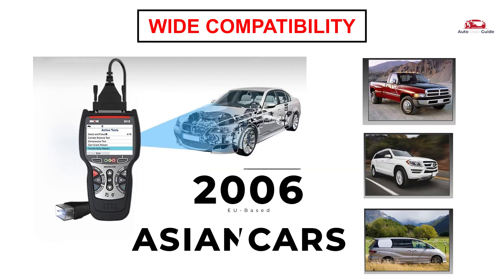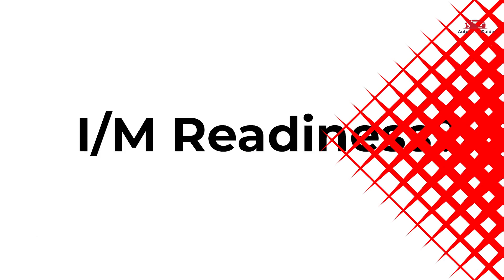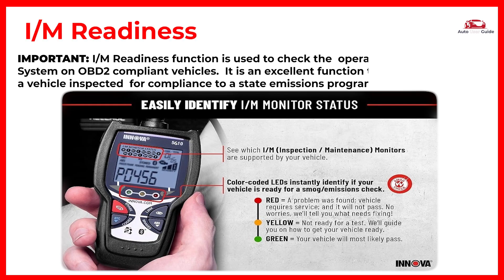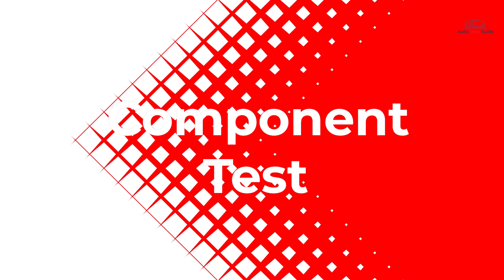The I/M readiness function is used to check the operations of the emission system on OBD2 compliant vehicles. By simply pressing the one-click I/M readiness key, you can retrieve the I/M readiness status. According to different readiness statuses, the color LEDs will illuminate and different audio tones will be heard.